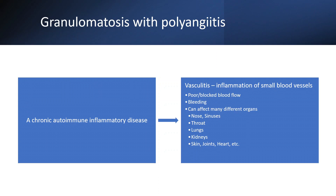Granulomatosis with polyangiitis is inflammation most often of the small, very tiny blood vessels. Because we have blood vessels everywhere, that inflammation can affect a variety of different places in the body. That includes the nose or sinuses, throat, lungs, kidneys, but can also include skin, joints, heart — really anywhere, because we have blood vessels anywhere. But these are the areas we would see more commonly with GPA.